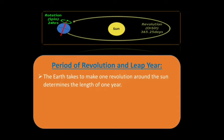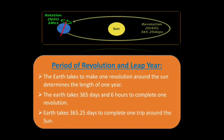The Earth takes to complete one revolution around the Sun determines the length of one year. The Earth takes 365 days and 6 hours to complete one revolution. Earth takes 365.25 days to complete one trip around the Sun.